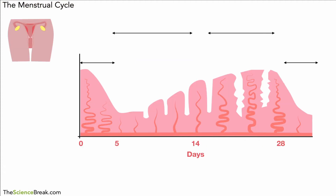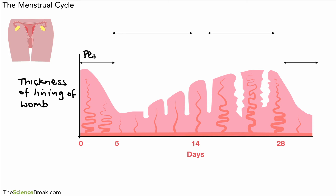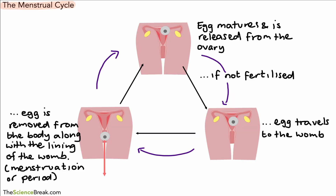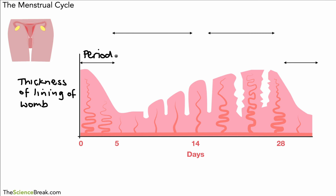Now we can look at a slightly different version of that same thing. Here we're looking at a graph with the number of days along the bottom and the y-axis referring to the thickness of the lining of the womb. As you can see, it varies in thickness over time. From day zero to day five, this is where we have menstruation or the period — the point where the egg is removed from the body along with the lining of the womb — and that usually lasts around about five days.